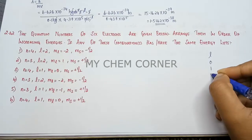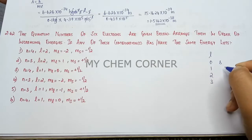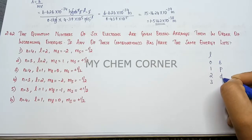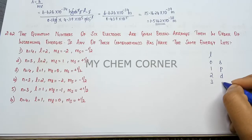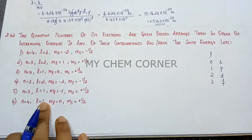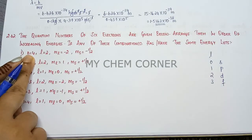For l value 0, the orbital is s. For 1, it is p. For 2, it is d, and for 3, it is f. Now accordingly, we are going to put the orbitals. Since the principal quantum number is 4...